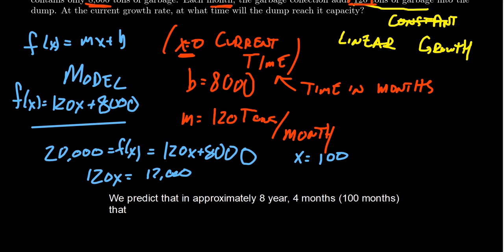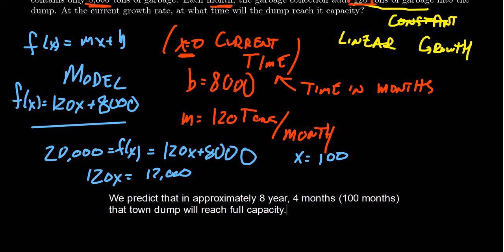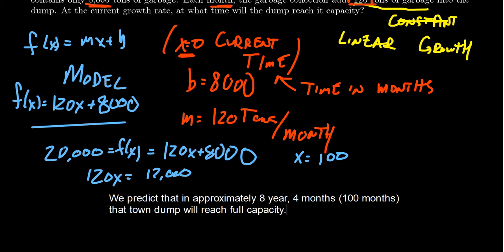the town dump will reach full capacity, which is sort of bad news if we don't want trash spewing all over the city. So basically, our town has eight years to come up and implement a plan to fix the garbage situation. And so we can use linear growth to model this type and model and solve this story problem here. And the critical thing here is that we use the linear model because constant growth is linear growth. The two things are one and the same thing.